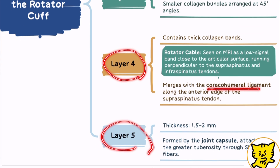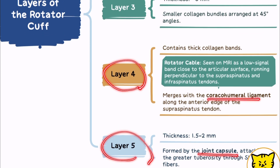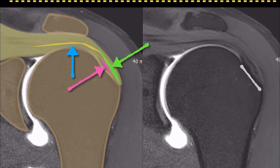On oblique coronal fat-suppressed T2-weighted images, the bursal surface (layer 2) and articular surface (layer 3) appear as low-signal-intensity layers.